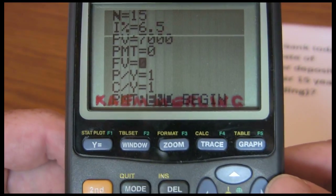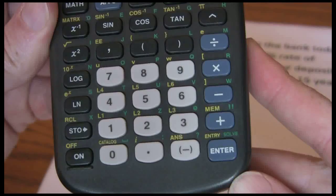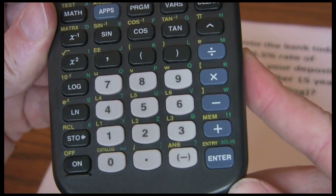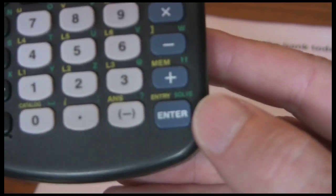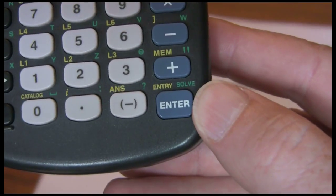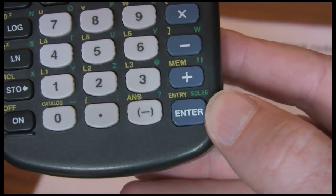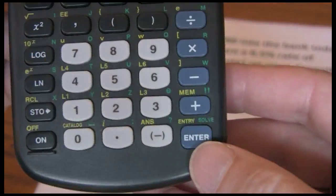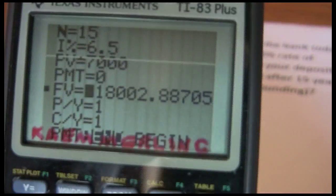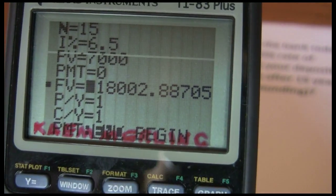And we're solving for the future value. Now in order to solve for the variable we're trying to find in the 5 key approach with the TI-83 and TI-84, we want to go down to this bottom where you can see the solve there. It's a green shift of the enter. So we want to press this green shift here. Then solve. You can see our answer $18,002.89.